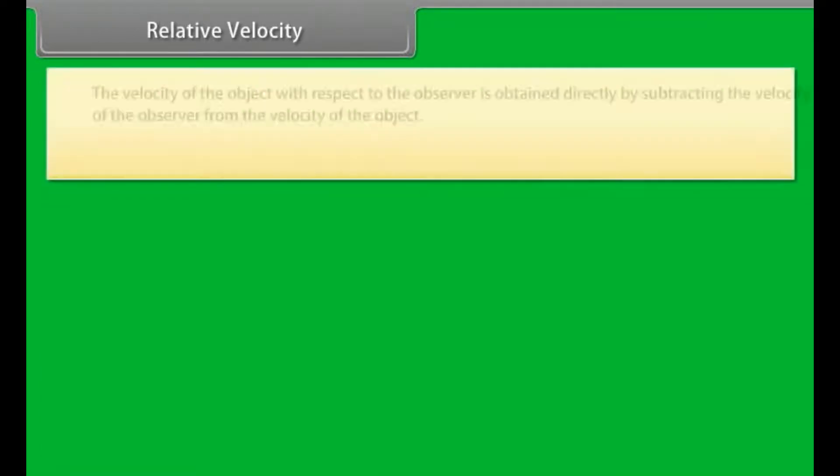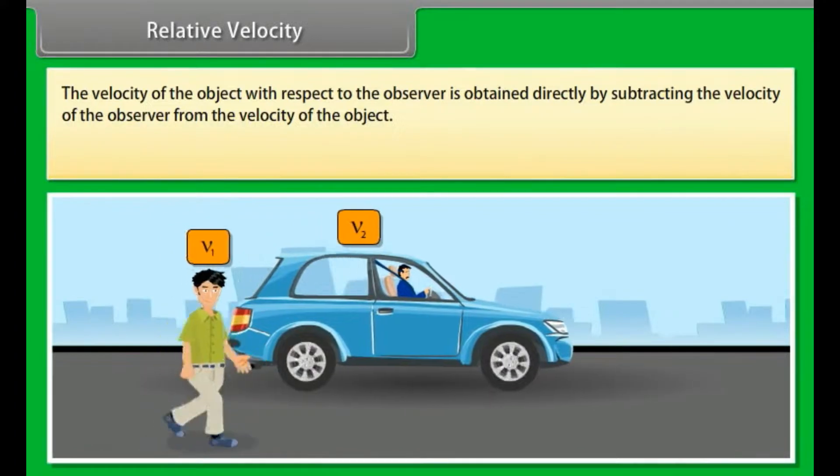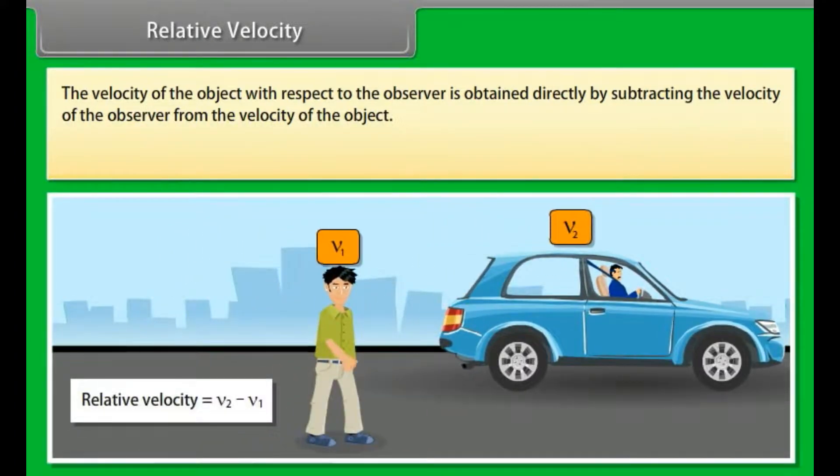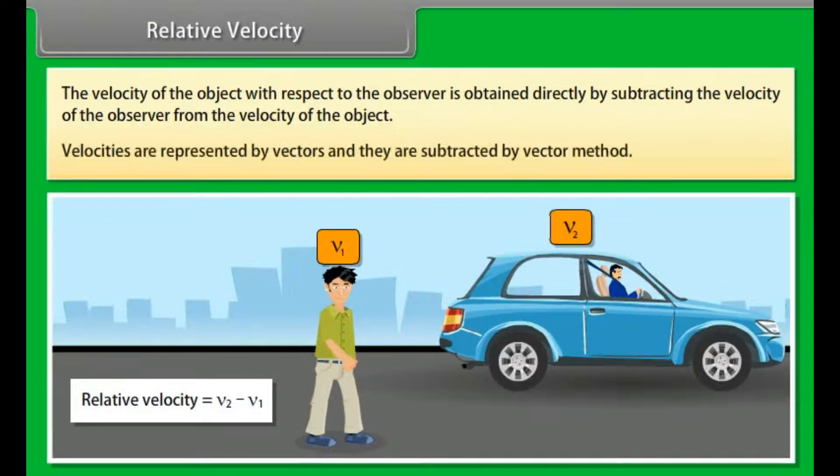Relative velocity. The velocity of the object with respect to the observer is obtained directly by subtracting the velocity of the observer from the velocity of the object. Velocities are represented by vectors and they are subtracted by vector method.